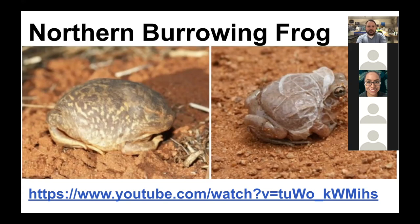When it rains, the frog climbs out of the ground knowing it has a very short time above ground, so it starts croaking immediately to find a mate, reproduce, lay eggs, have tadpoles turn into frogs, and bury themselves before the water dries up again. You can search YouTube to watch a video of this frog burrowing and emerging.